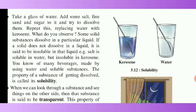Take a glass of water and add some salt, fine sand, and sugar to it and try to dissolve them. Repeat this replacing water with kerosene. Some solid substances dissolve in a particular liquid. If a solid does not dissolve in a liquid, it is said to be insoluble in that liquid. For example, salt is soluble in water but insoluble in kerosene. The property of a substance of getting dissolved is called its solubility.